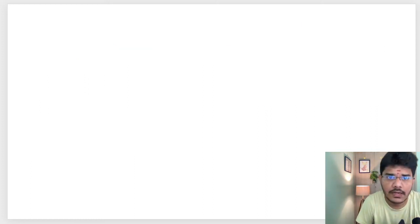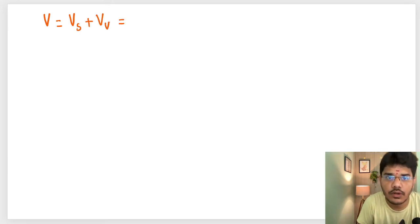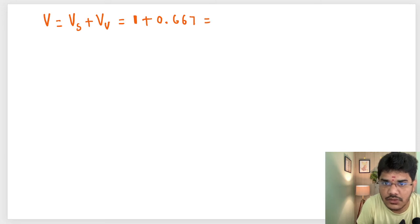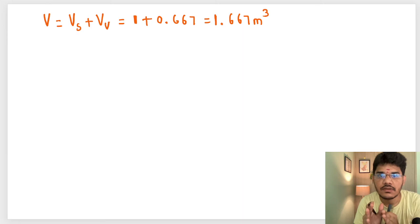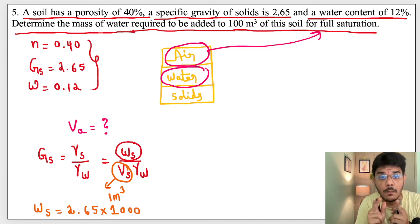Now let us calculate the total volume of soil. Total volume = volume of solids + volume of voids = 1 + 0.667 = 1.667 m³. So total volume of the soil sample is 1.667 m³ for our assumed 1 m³ of solids.